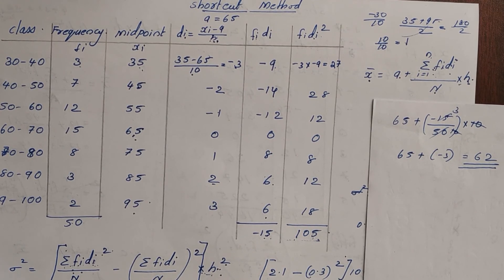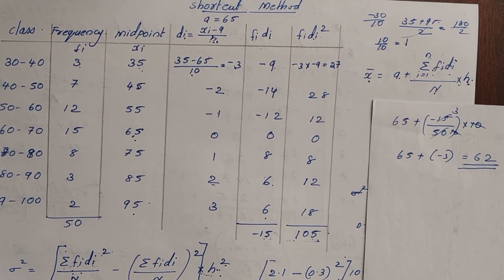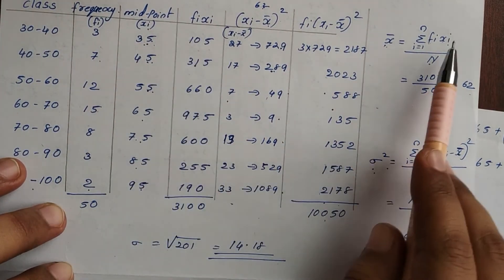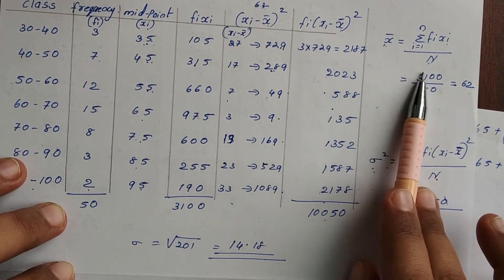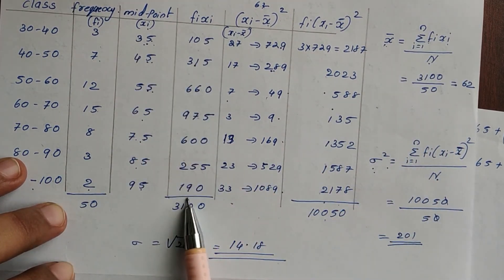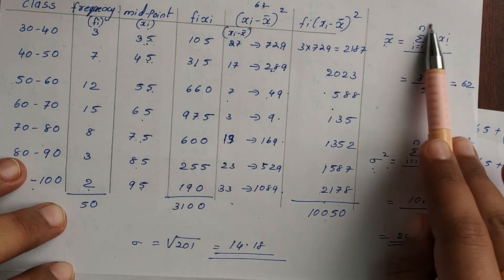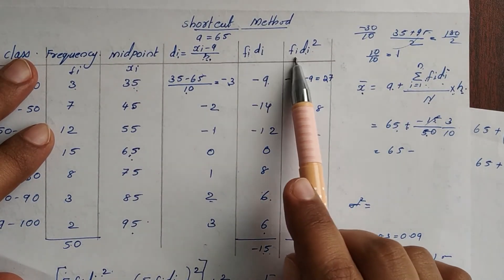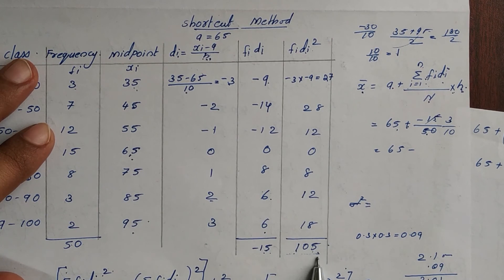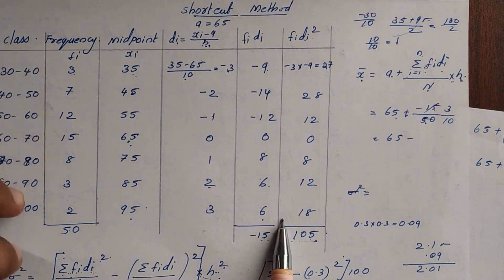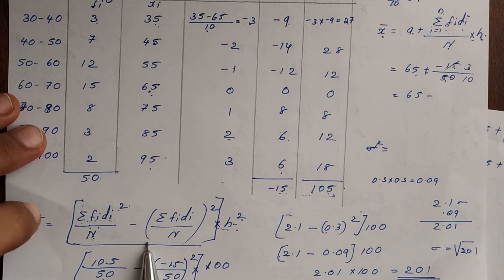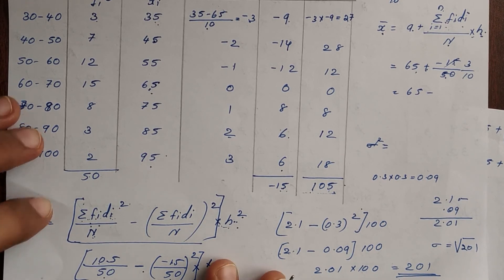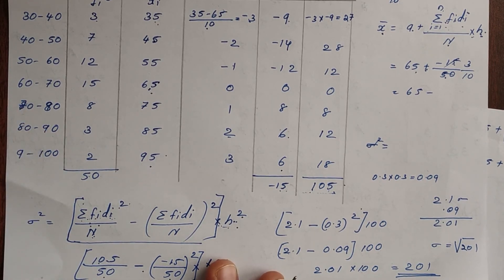So here is continuous frequency distribution using the shortcut method. You can choose either the shortcut method or the direct method. If you use the step deviation method you compute fi·di and fi·di² columns to get the mean and variance efficiently. If you like this video, please like, comment, and share it with your friends.